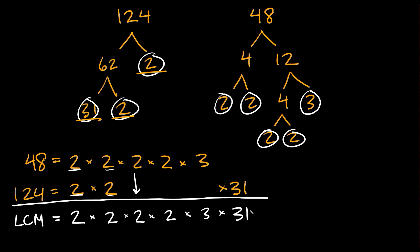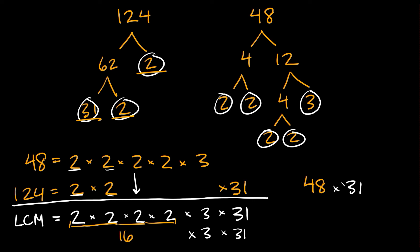All we have to do now is multiply this all together. 2 times 2 is 4; 4 times 2 is 8; 8 times 2 is 16. So we have 16 times 3 times 31. 16 times 3 is 48, and 48 times 31 is 1488. So the least common multiple of 48 and 124 is 1488.